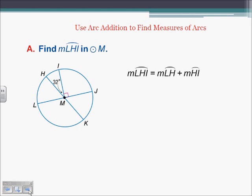Find the measure of arc LHI in circle M. The measure of arc LHI equals arc LH plus arc HI. We know HI is 32. Since angle LMI is 90 degrees, angle LMH is 90 minus 32, which equals 58 degrees. Arc LH therefore corresponds to 58 degrees. So arc LHI equals 58 plus 32, which gives 90 degrees.